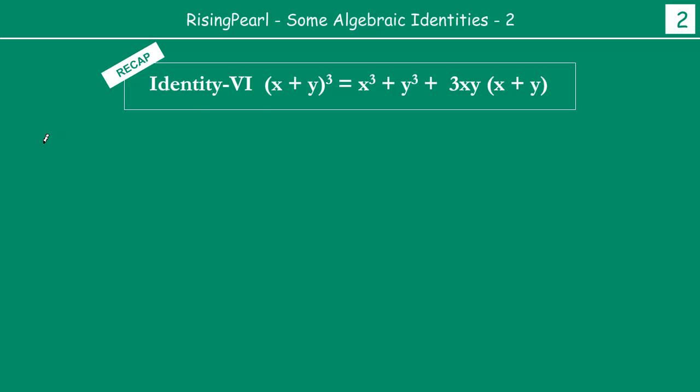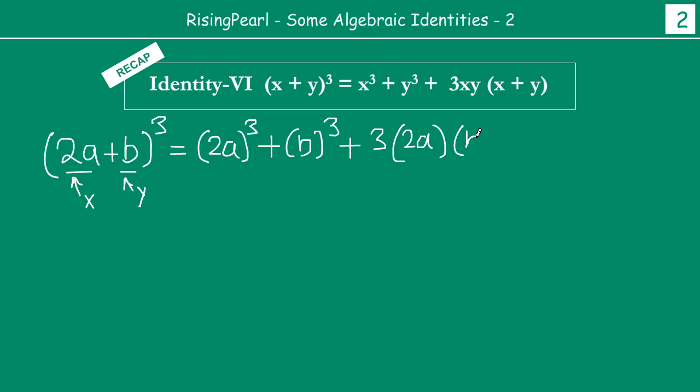For instance, if you are given, say, 2a plus b whole cube, and you are asked to write this in expanded format, you basically have two terms a plus b whole cube or x plus y whole cube. So when you expand this, this will become x cube plus y cube. Here we are replacing x by 2a and we are replacing y by b. So x cube plus y cube plus 3xy times x plus y.